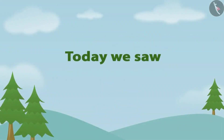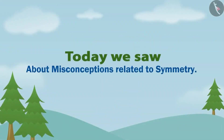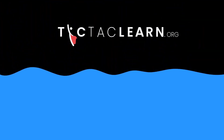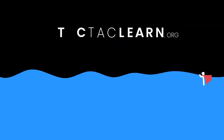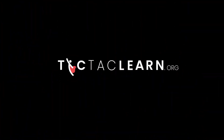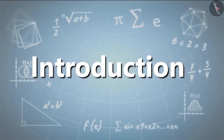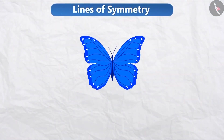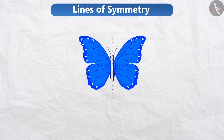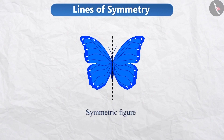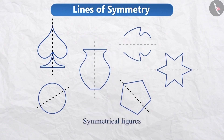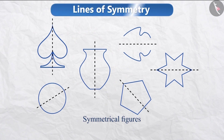Today we saw some misconceptions related to symmetry. Today we will learn about lines of symmetry. In the previous video, we learnt that a figure which is in equal balanced ratio is called a symmetric figure. The given figures are symmetrical figures. To understand this better, let's now learn what the line of symmetry is.